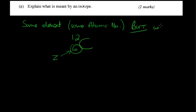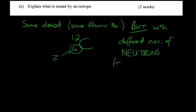So it's the same element, same atomic number but with different numbers of neutrons. Different numbers of neutrons, i.e. it's got different mass number. Different mass number. Remember the mass number is also called the nucleon number.